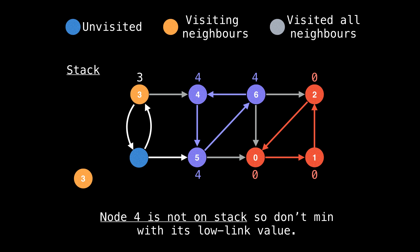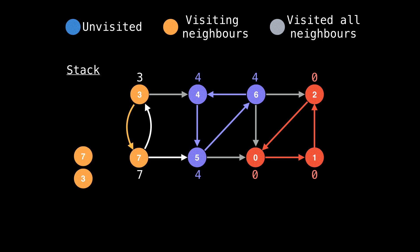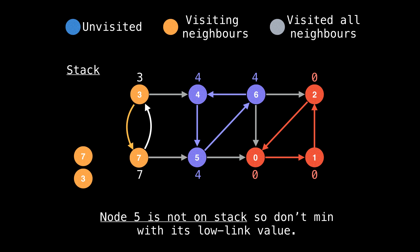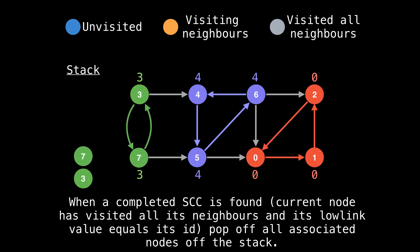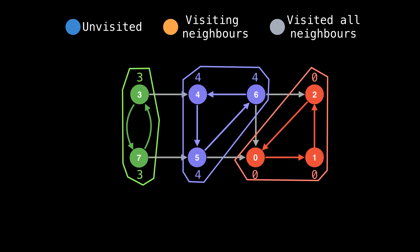However, we have not finished visiting all of node three's neighbors, so we cannot make that assessment just yet. Now take the downward edge to visit node seven, then take the edge to node five. On the callback, notice that node five is not on the stack, so we don't min with its low link value. Now up to node three — on the callback, we can min with node three's low link since node three is on the stack. Also min with node seven. So now we've finished the last strongly connected component; all we need to do is remove all associated nodes from the stack. And that's how Tarjan's algorithm works to find strongly connected components.